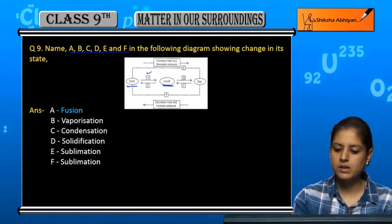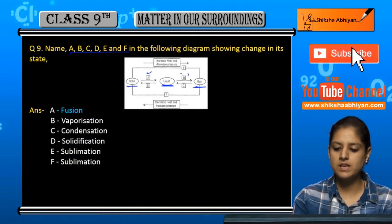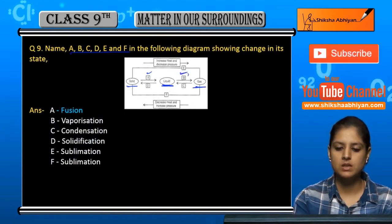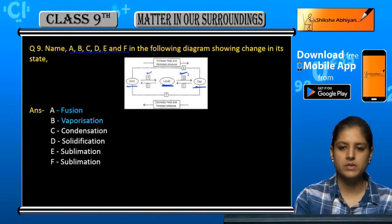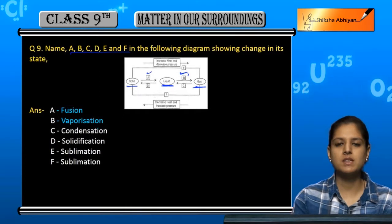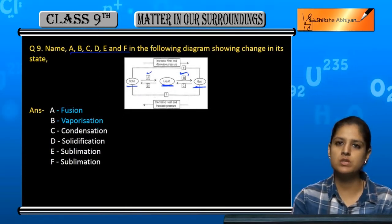If we look at B, what is in B? Liquid converts to gas. Liquid converts to gas - the name of the process is vaporization.